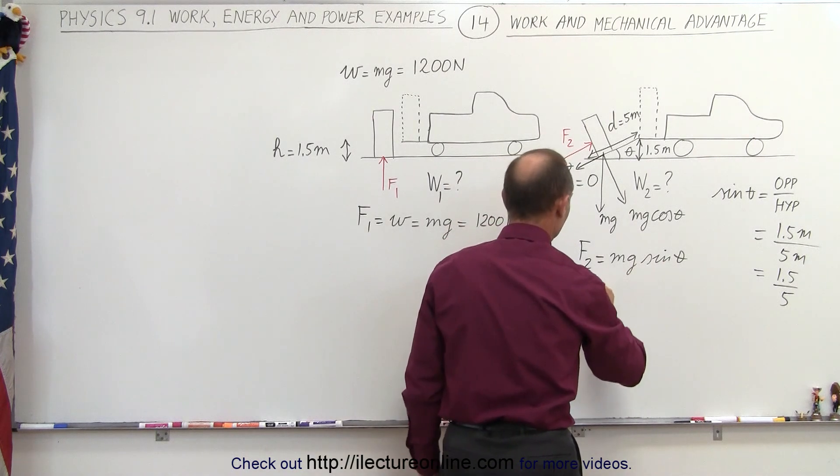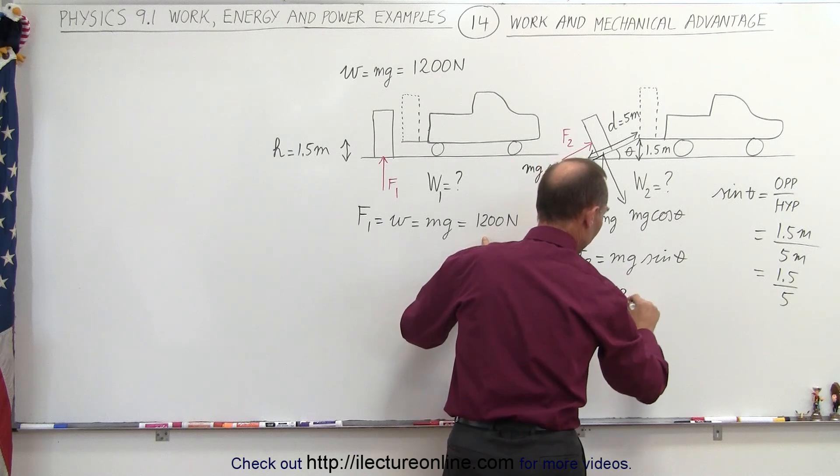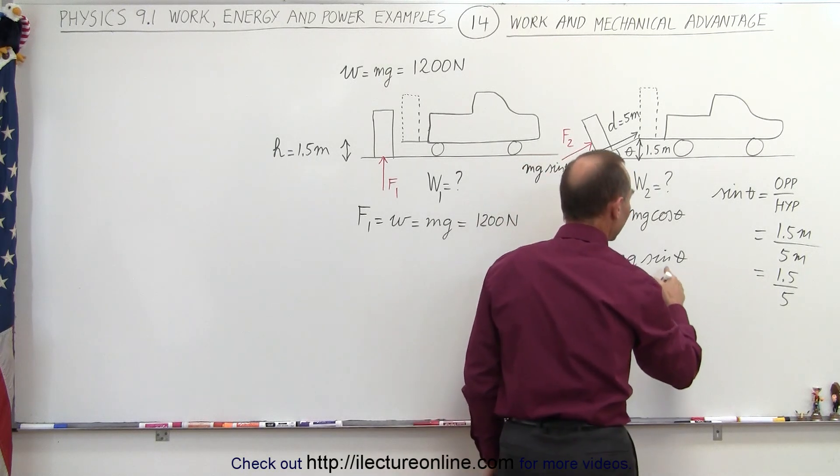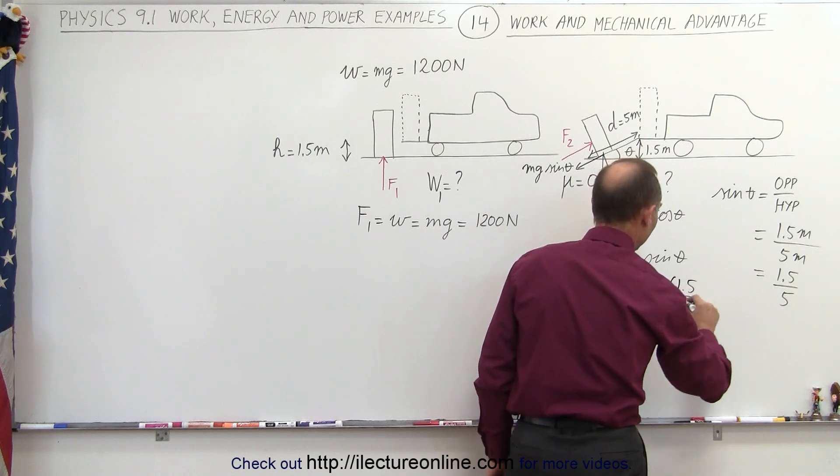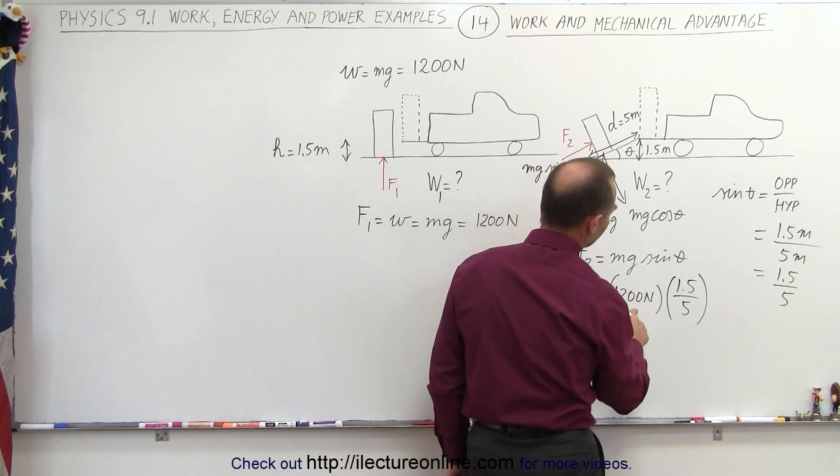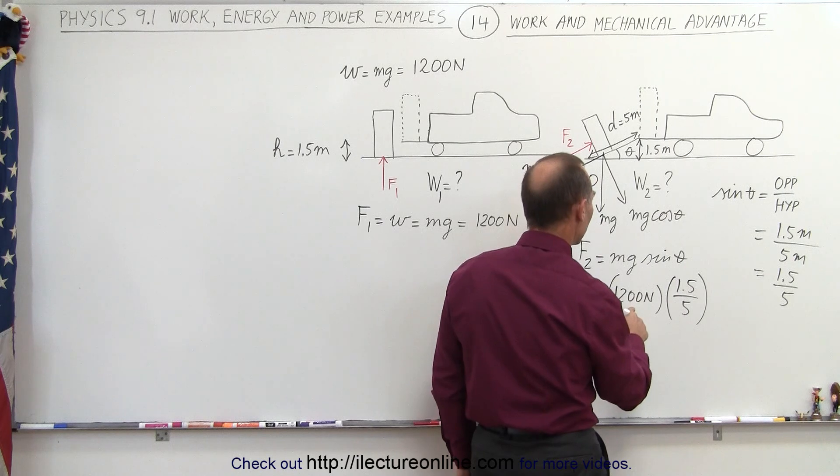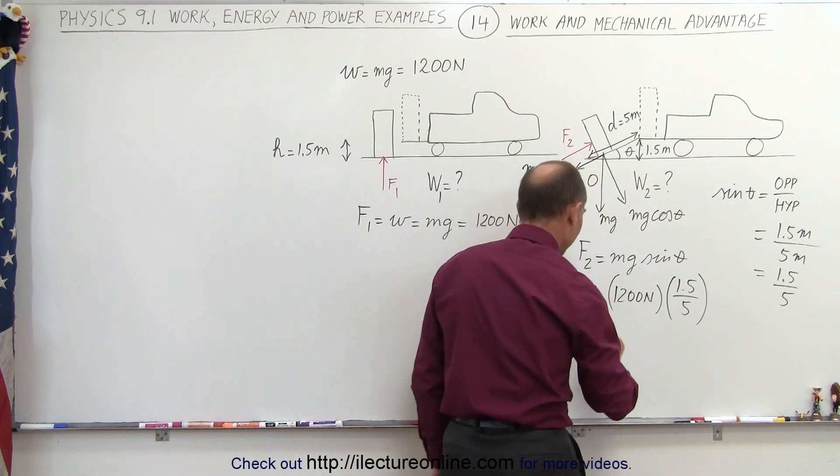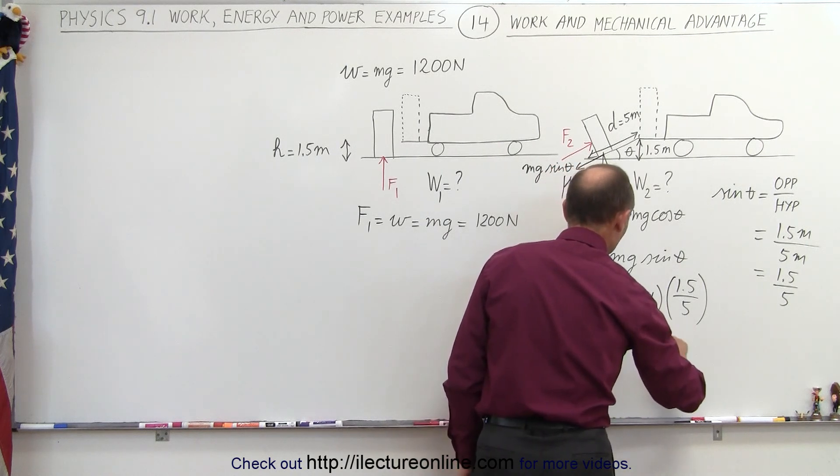If we plug that in here we can say that F2 is equal to mg which again is equal to 1200 newtons times the ratio created by the sine of theta which is the opposite side over the hypotenuse, so 1.5 divided by 5. So 5 goes into 1200, that would be 240, and we multiply that by 1.5, that would be F2 is equal to 360 newtons.